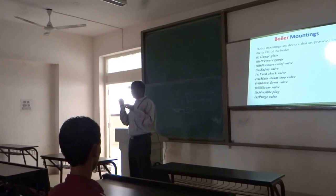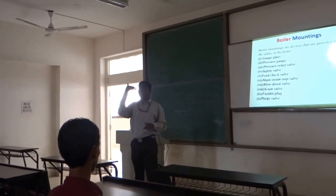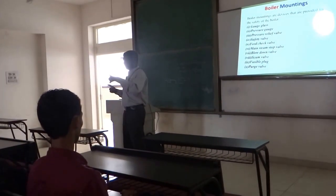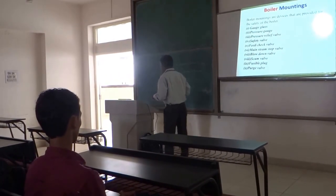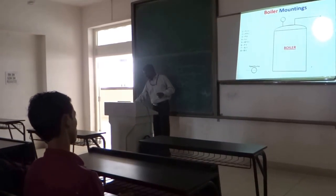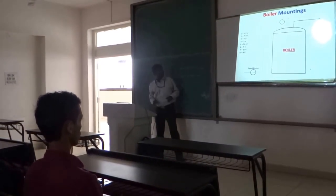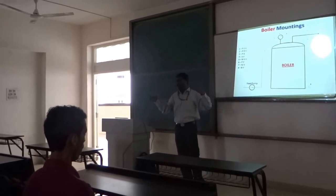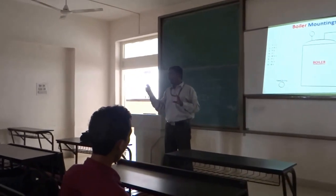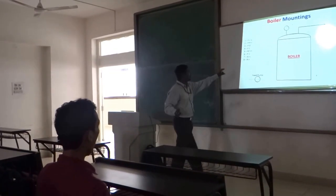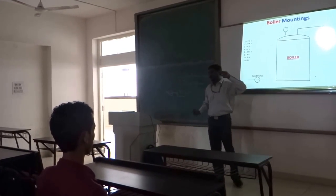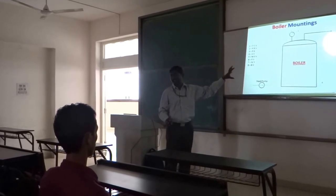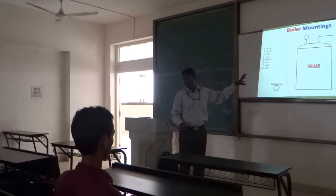It is the responsibility of the boiler operator to ensure a sufficient quantity of water is present inside the boiler. To indicate the water level, we have gauge glass. This schematic diagram shows various components. For boiler mountings I have listed 10 components. Two of them — fusible plug and gauge glass — are not shown here. All other necessary valves which are boiler mountings are listed in the diagram.